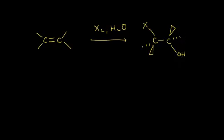Here's the general reaction to make halohydrins from alkenes. Starting with an alkene and adding a halogen and some water, you can see that an OH and a halogen are added anti to each other — on opposite sides of where the double bond used to be.